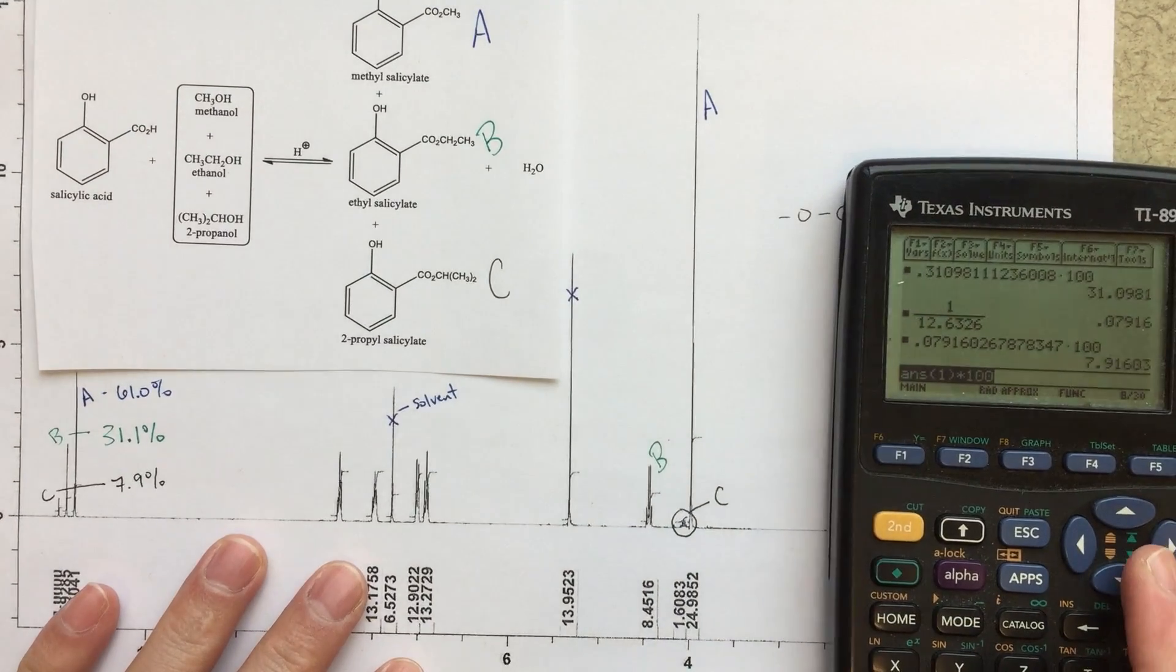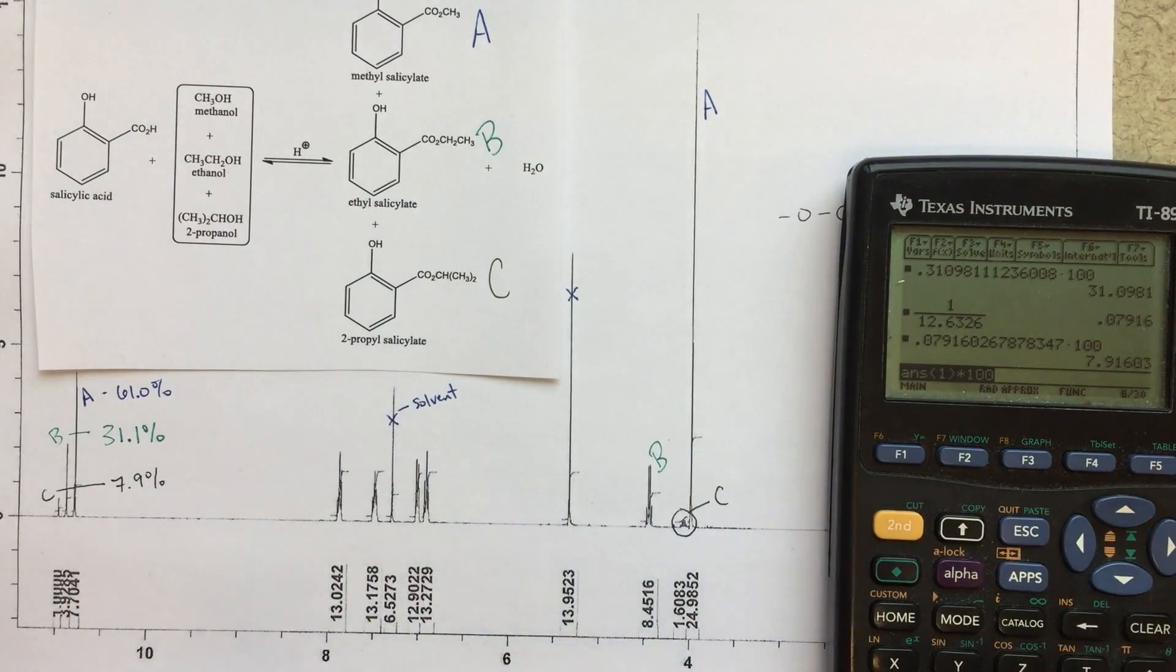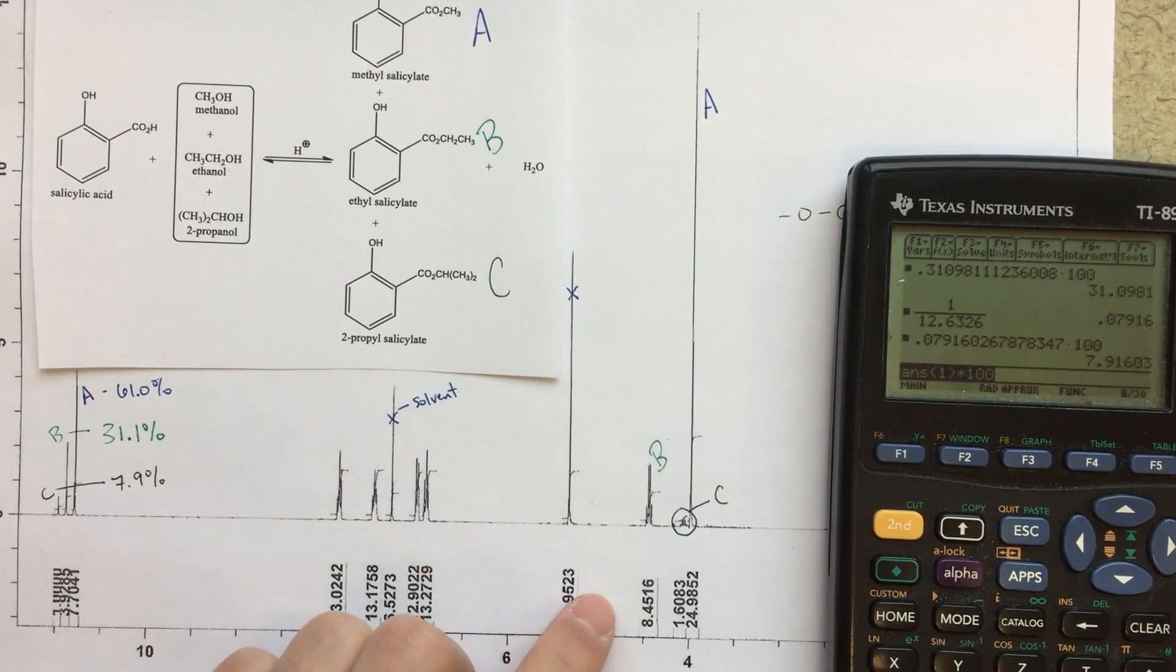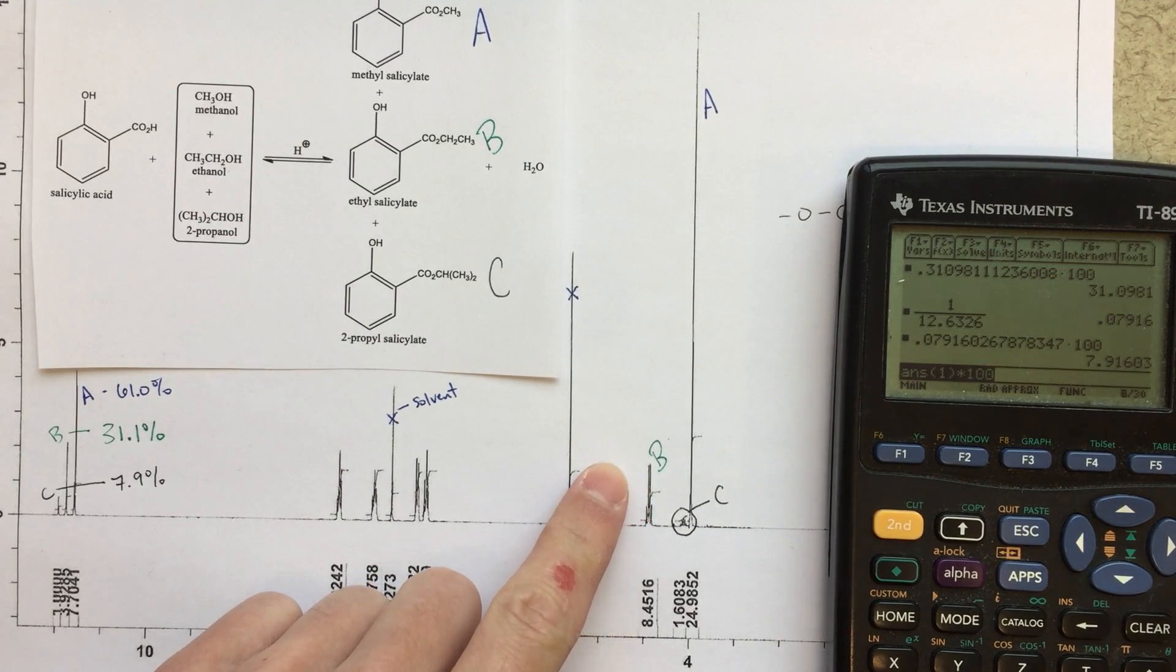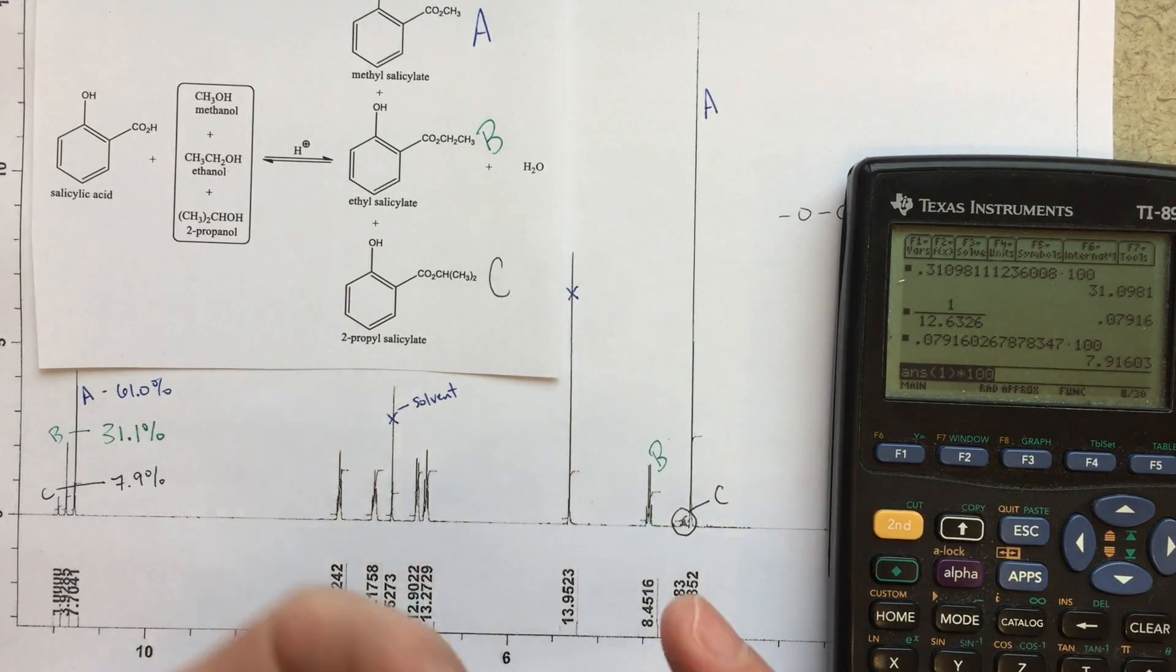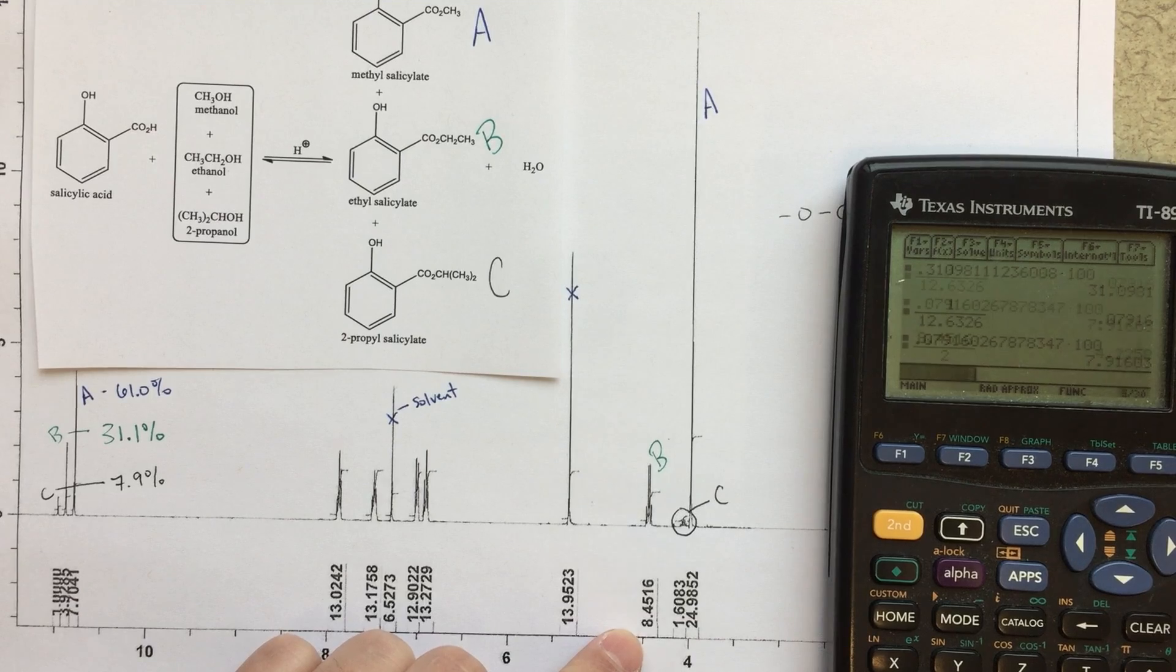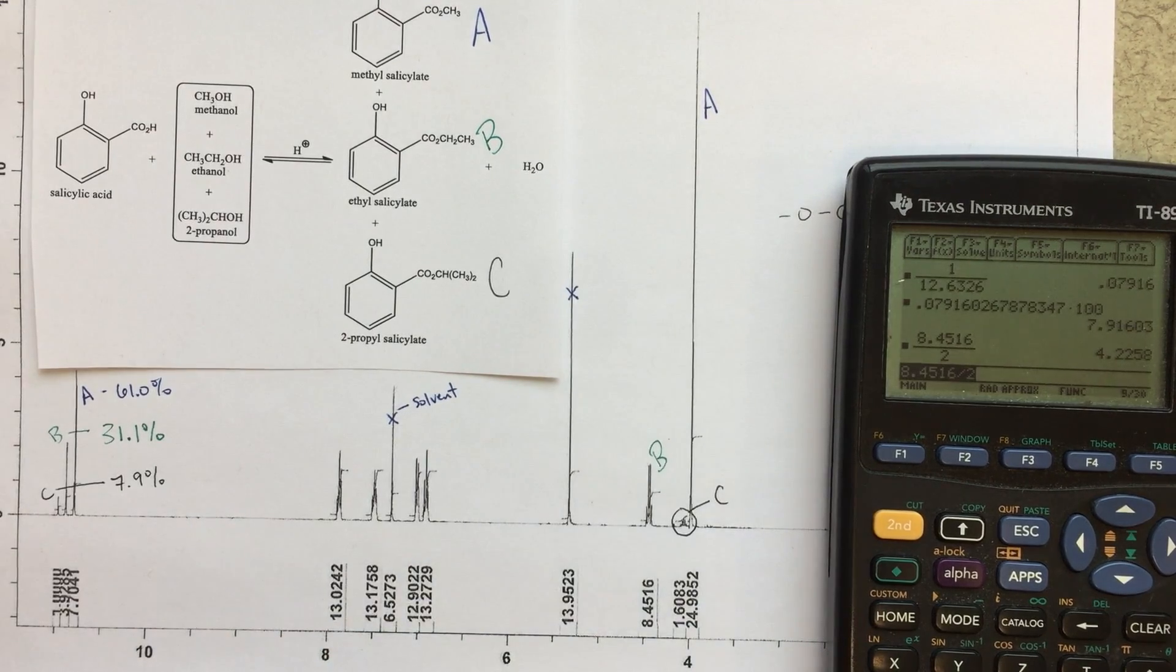So we would need to sort of standardize or take that into account as we're doing this process. The way that I would do that, and I don't know that this is totally necessary, but it's just an interesting thing to do. I would standardize each of these to 1, essentially. So if this is represented 2 peaks, I'm going to find what area would be for 1 peak. So the way I'll do that is just take 8.4516, and I'll divide that by 2, the number of protons. So that sort of changes this number. Not really changes, but standardize it.